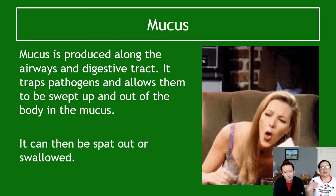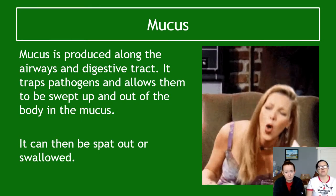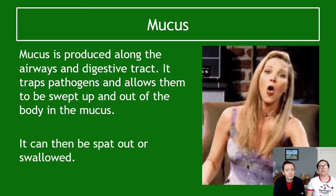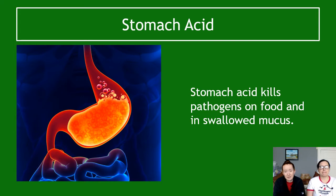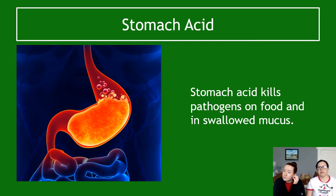Mucus is produced along your airways and digestive tract; it traps pathogens, allowing them to be swept out of the body in mucus or excreted in faeces. To summarise part one: physical defences use epithelial cells in inside skin areas, and chemical defences include tears, saliva, mucus, stomach acid, and similar substances.